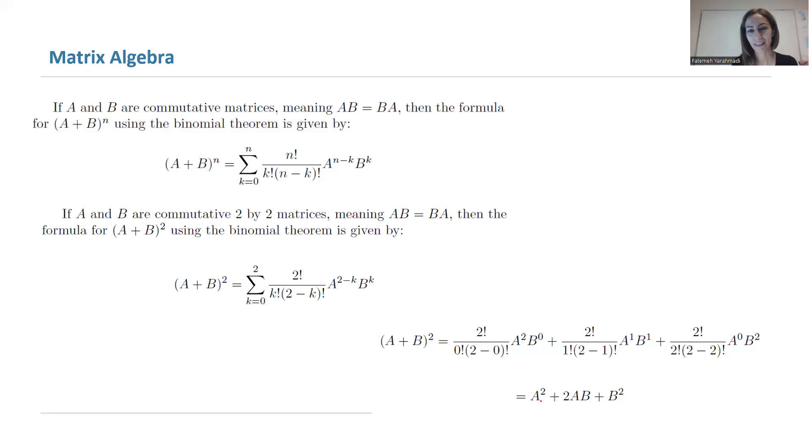Basically, you end up with A² plus 2AB plus B².